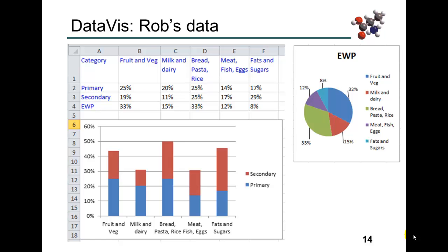Okay, so Rob's data — here's an example. This was collected from a series of diet diaries, then collated into information for primary schools and secondary schools. We've also got some information on the Eatwell chart — the stacked bar chart there compares the Eatwell plate, looking at the percentage of food from the Eatwell plate categories in the diets of kids from primary and secondary schools in the local town. There's also a pie chart with the Eatwell plate. So what we'll do now is close this down and open up the dashboard directly in Tableau Public and have a look at what it can do.